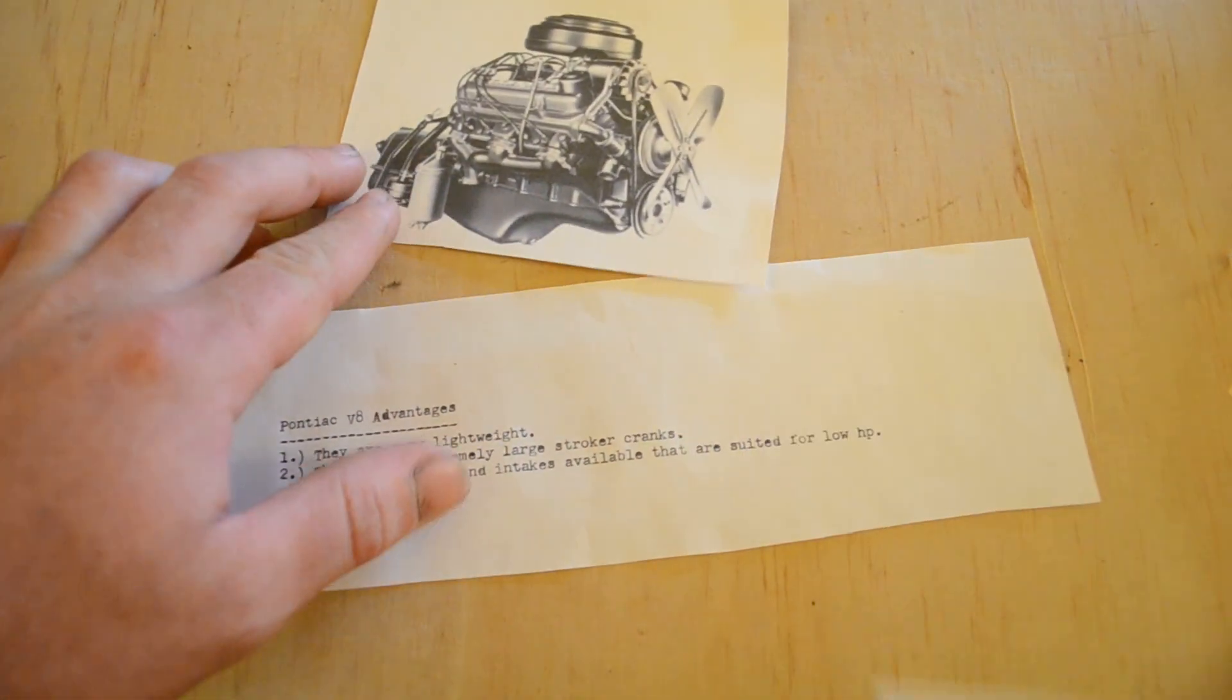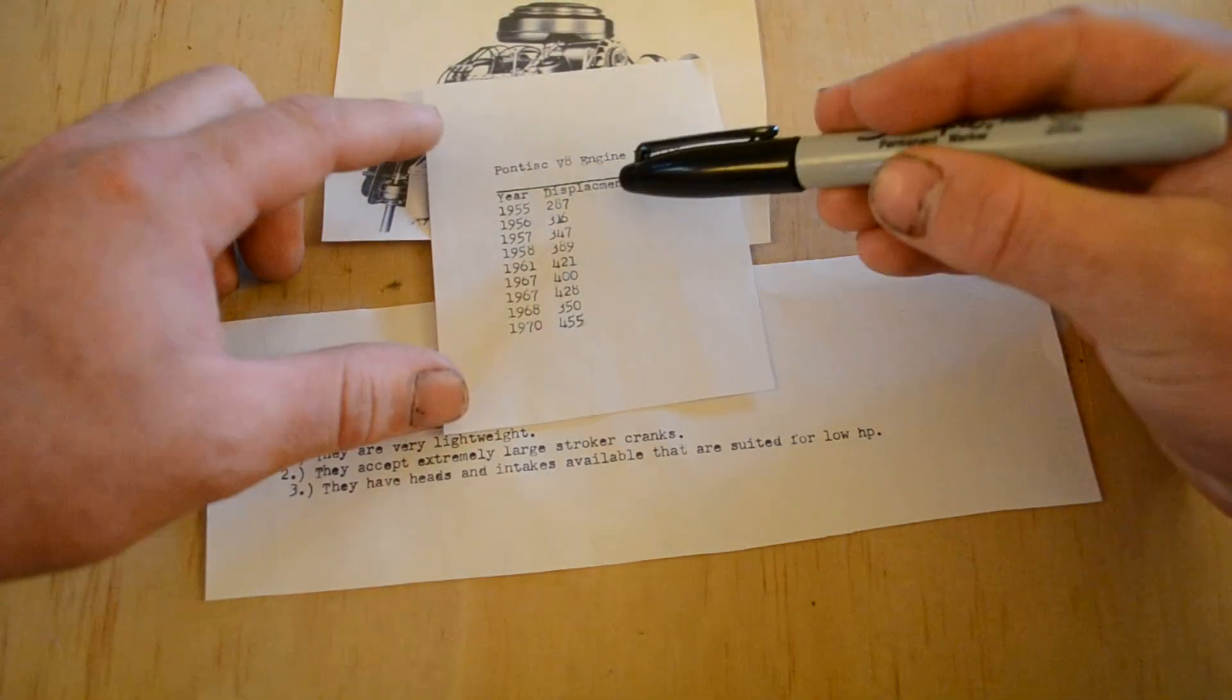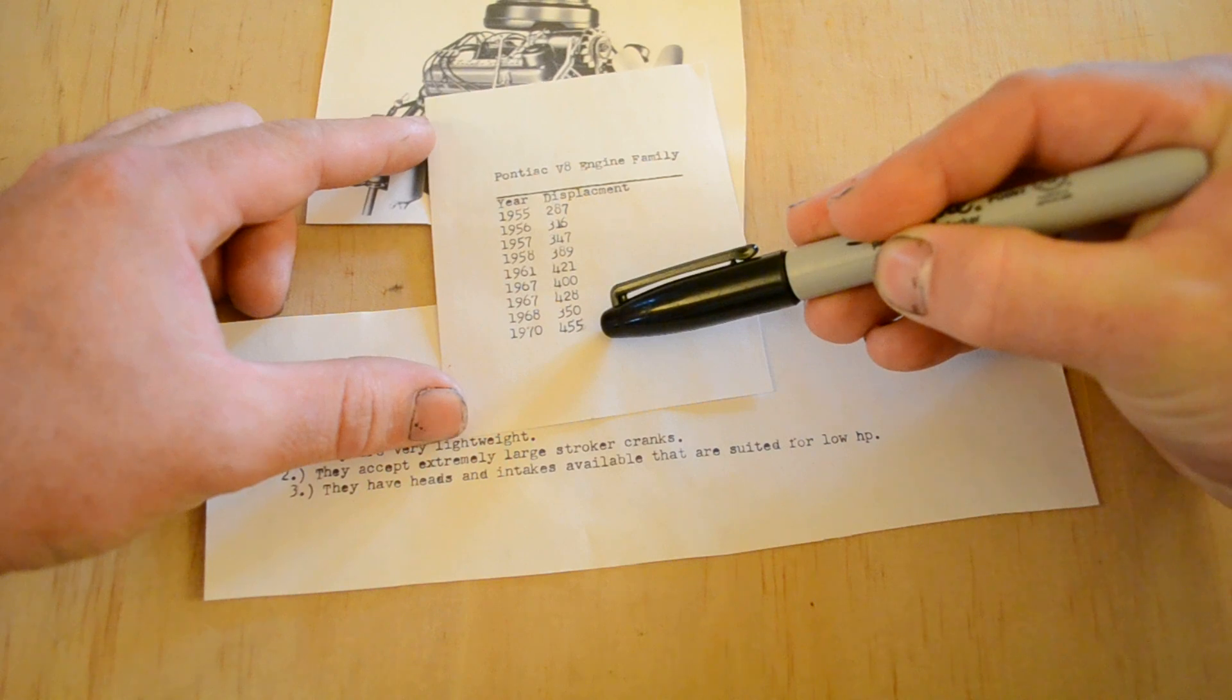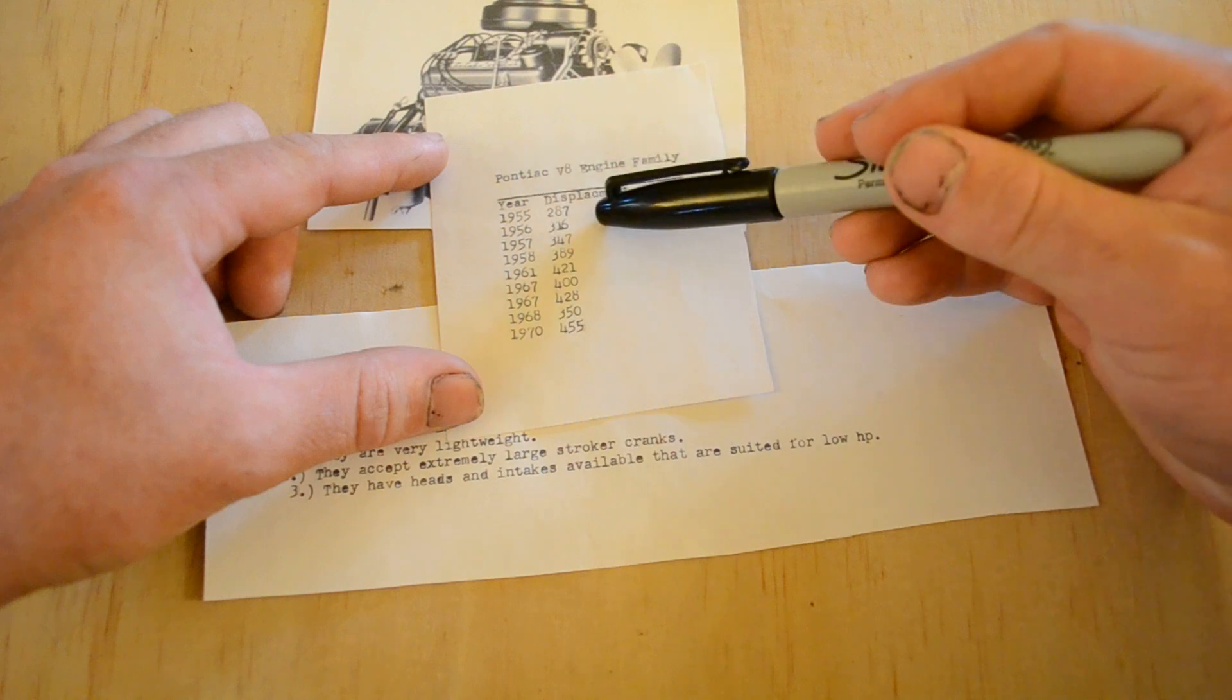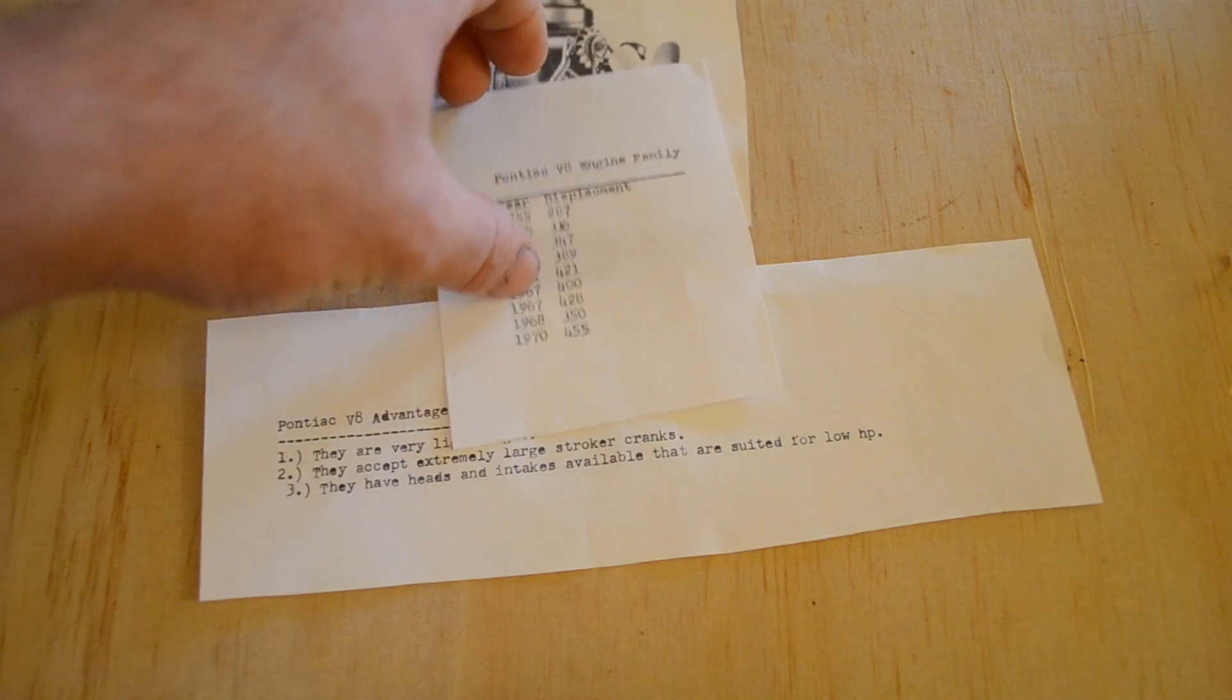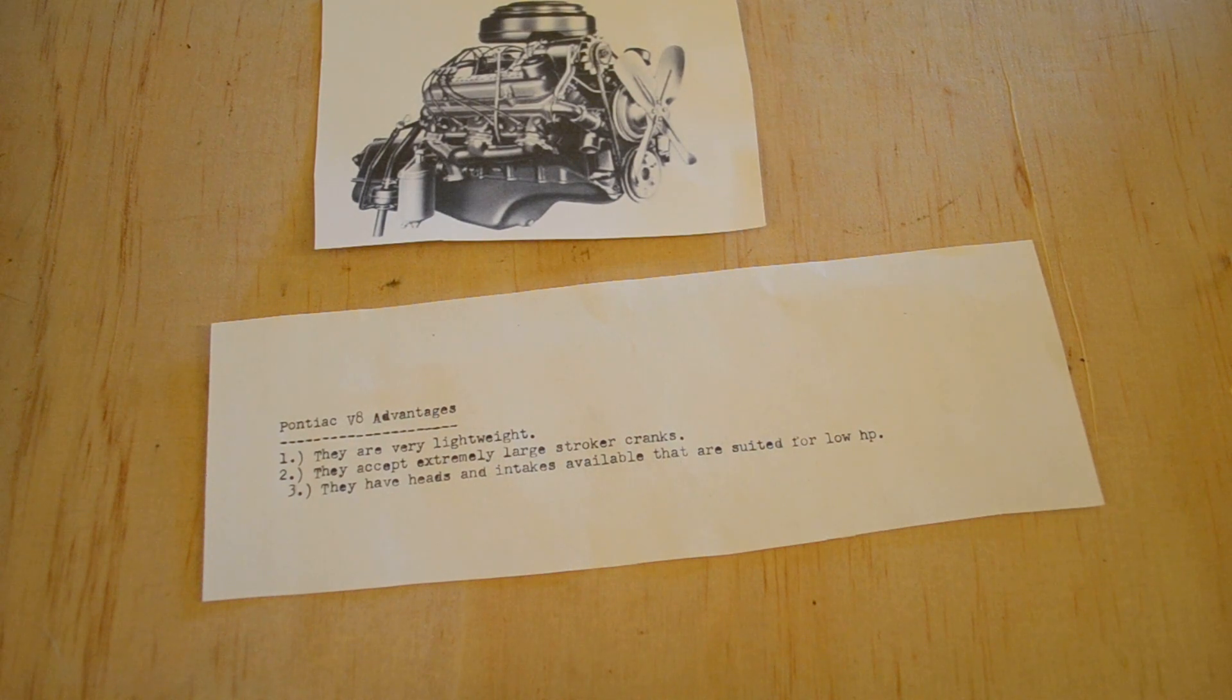The best thing about Pontiac V8s is they had a huge variety of displacements. When the engine family started in 1955, they had a displacement of 287 cubic inches, and they grew all the way up to 455 cubic inches, and most parts interchange between those engines. The great thing is, in 1955, the 287 made 200 horsepower, which is perfectly suited for me. That means that the ports and the valves are almost exactly the right size, and you can bolt those onto an extremely high displacement engine. There's very few engine families out there that allow that. You can't find big block Chevy heads that small.